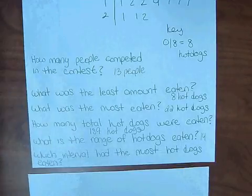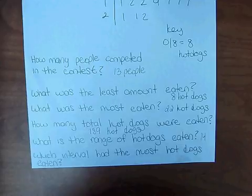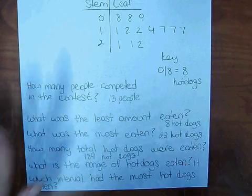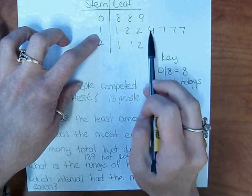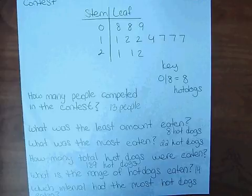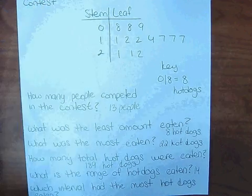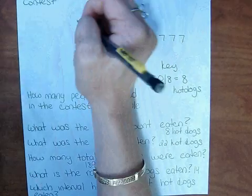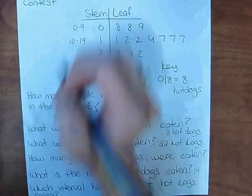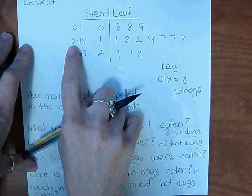Which interval had the most hot dogs eaten? There are two things to focus on here. The most amount means which stem had the most amount of data. The stem that had the most data is stem 1, because 7 people ate hot dogs within that stem. But it's asking for the interval, not the stem. The interval for stem 0 covers numbers 0 through 9, stem 1 covers 10 through 19, and stem 2 covers 20 through 29. So the interval with the most hot dogs eaten is 10 to 19.